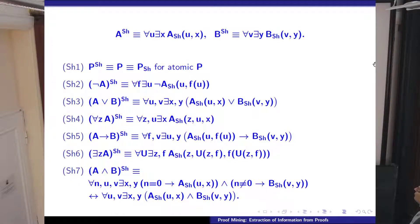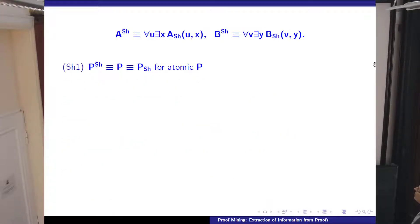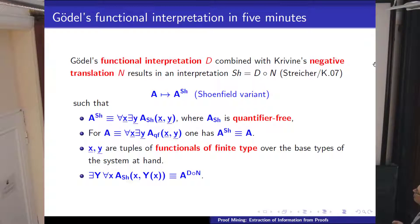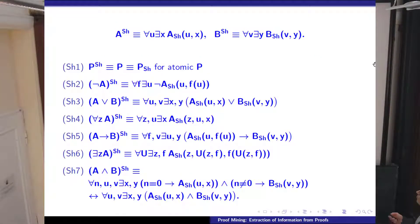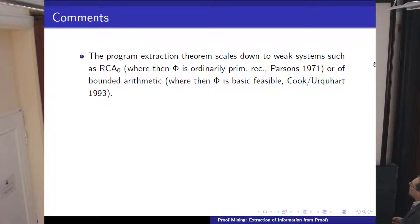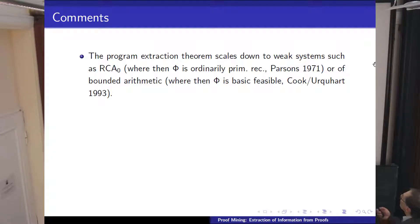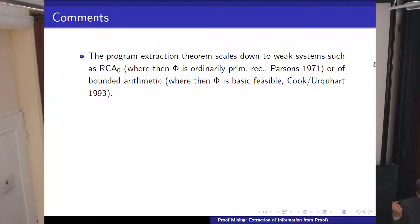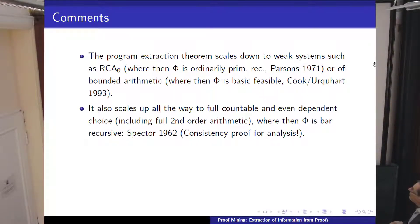This is the Shoenfield interpretation. If A was already in for-all-exist form, nothing gets changed. Then you have a soundness result which allows you, from a proof of A, to extract a program witnessing the Shoenfield interpretation of A. This works for a whole variety of systems. You can go down to extremely weak systems—you can restrict induction to sigma-1 induction and get just ordinary primitive recursive functions, or to NP induction for NP problems, as used by Cook and Urquhart—they used the dialectica interpretation to show that you then get polytime computable witnessing functions.